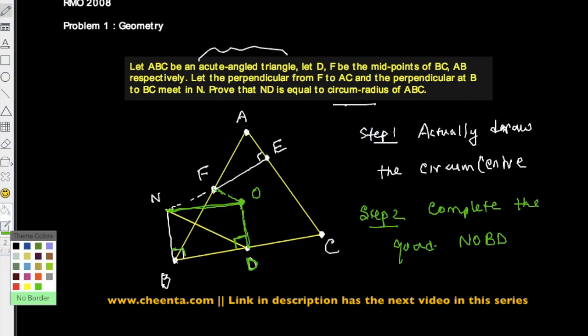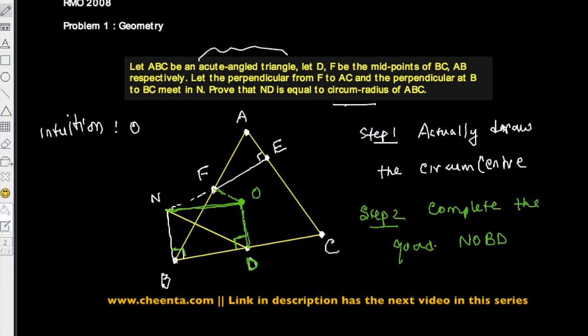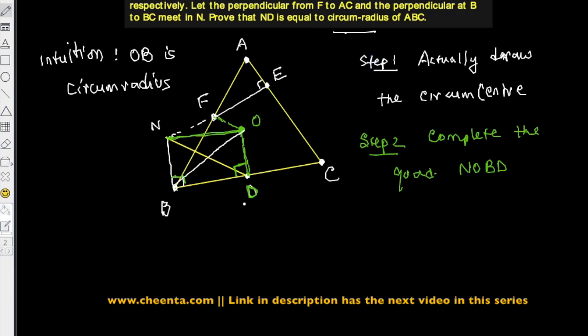Once we have quadrilateral NOBD, it makes sense to join NO, because it looks like a rectangle — and we will see that it is indeed a rectangle. The motivation is that OB, the other diagonal, is the circumradius. If we can show that NOBD is a rectangle, then the two diagonals are equal, and hence ND will also equal the circumradius of ABC.